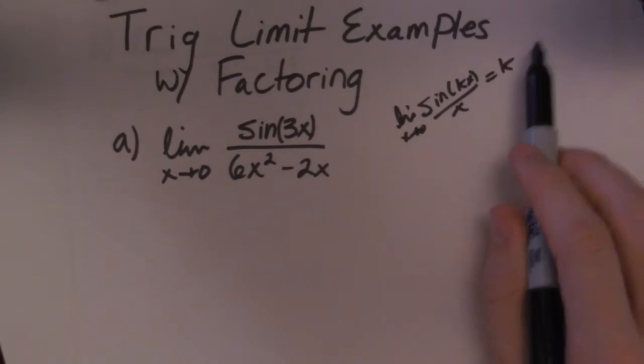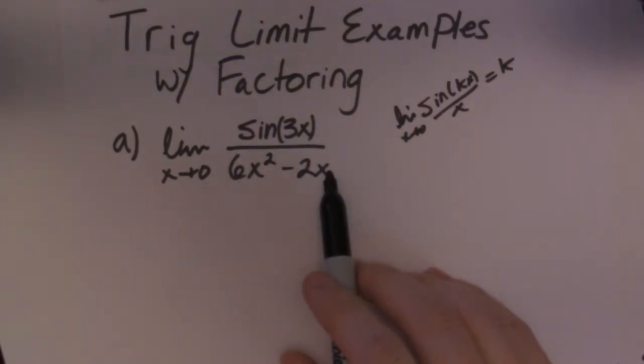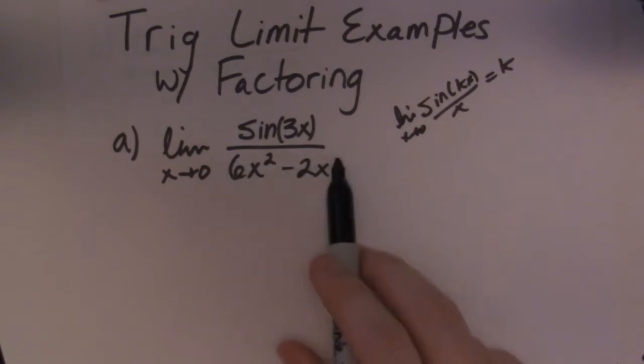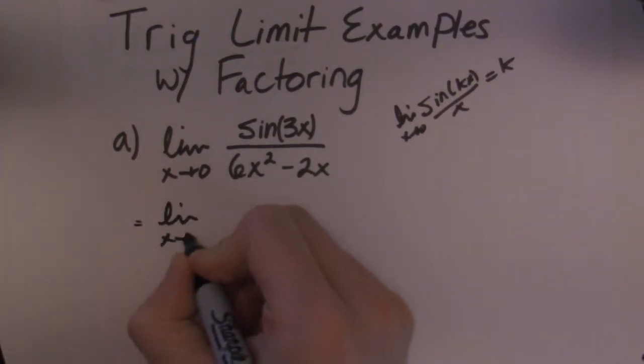So if you look at this guy, I have a trig function with a polynomial. So whenever that's the case, generally you're going to get your x from this guy, from that polynomial. So if I go ahead now and I factor this bottom part...